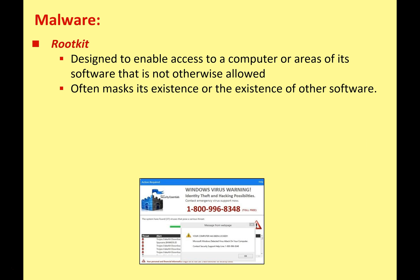Rootkits are nasty little pieces of malicious software designed to enable access to a computer or area of its software not otherwise permitted. A rootkit gets to your permissions, gives itself super-user access, and can then hide away in your computer — possibly hiding the existence of other malicious software. Once you have a rootkit on your system, they can be very difficult to get rid of, and even if you think you've removed them, they can reinstall themselves and other malware without your knowledge. There is special software available to help remove rootkits.